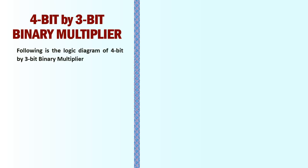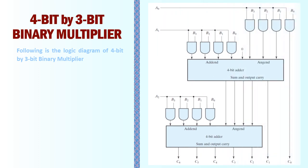Following is the logic diagram of a 4-bit by 3-bit binary multiplier. It is a circuit that accepts a 4-bit multiplicand and a 3-bit multiplier and gives a 7-bit multiplication result. We perform the multiplication with number B having bits B0, B1, B2, B3, and number A with bits A0, A1, A2, to get the product of the 4-bit multiplicand with the 3-bit multiplier A.